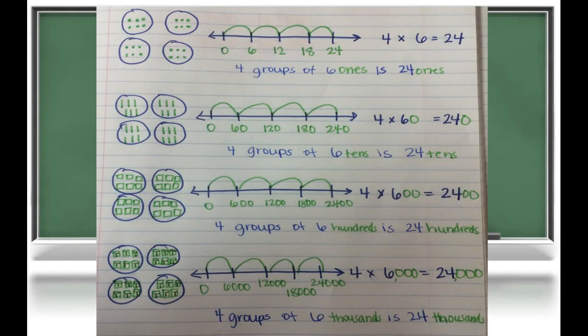In the top group of models, we have four groups of six ones is 24 ones. You can see it drawn out on a number line, and you can see it drawn as a quick pick. Next, let's move into groups of 10. We have 4 times 60 — we know that 60 is 6 tens, so we have 4 groups of 6 tens. We know 4 groups of 6 is 24, so 4 groups of 6 tens is 24 tens, or 240.